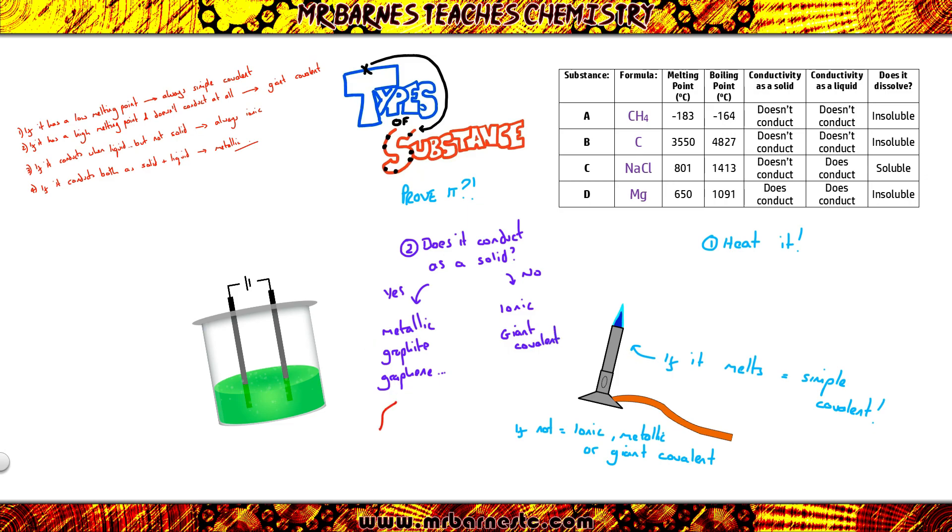Now step three to find out whether it's metallic or not. Can it be hammered into shape? Can you bend it? Can you shape it? If you can, it's metallic. If it's brittle and snaps really easily, it's going to be your graphite or your graphene.